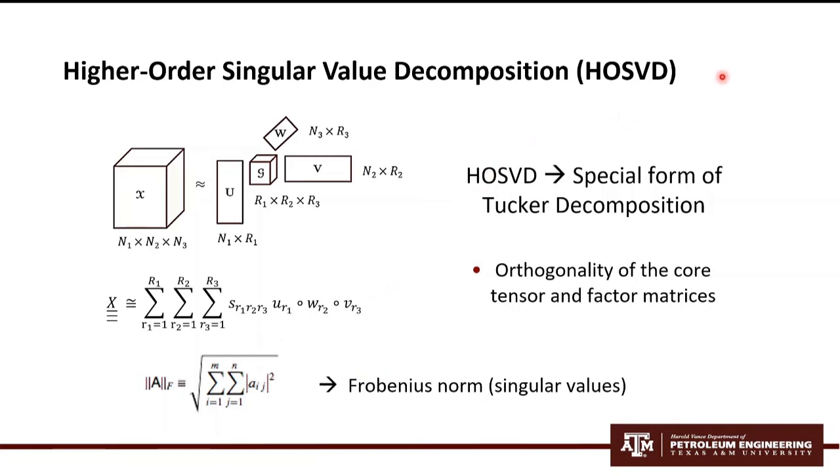Now, this is the HOSVD or higher order singular value decomposition. This is just a special form of Tucker Decomposition where the factor matrices and core tensors are orthogonal. This is the core tensor and is a combination of singular values, and the factor matrices here represent the combination of singular vectors. As you can observe, this is basically the same as Tucker Decomposition. The only thing is the orthogonal aspect.